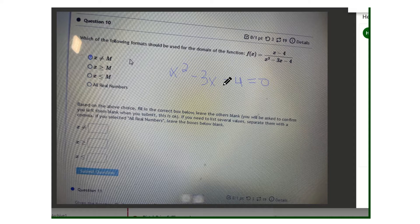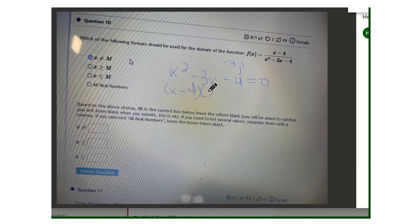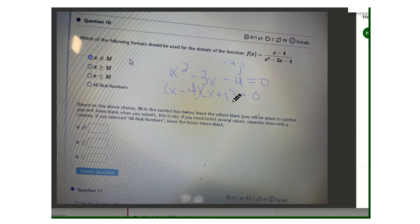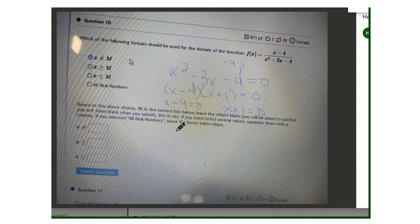Alright, so that factors nicely. Let's notice factors of negative 4 that add to a minus 3 will be a minus 4 and a positive 1. So that's going to give us x minus 4 and x plus 1. Then if we set those two factors to zero, we're going to get a positive 4 and negative 1.